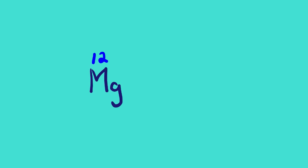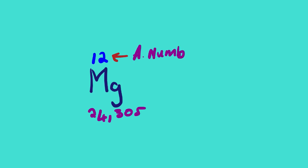Before we introduce the number of neutrons, we know the position of the atomic number is on top of the symbol of an element. When we get the atomic mass, it is the number located at the bottom of the symbol of the element on the periodic table grid. For magnesium, that is 24.305 — we call this the atomic mass. Since the atomic number is 12, magnesium is element number 12, and it has 12 protons and 12 electrons.